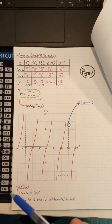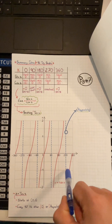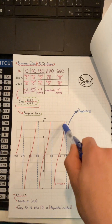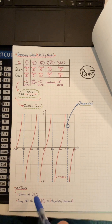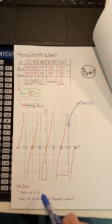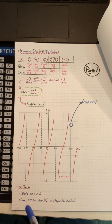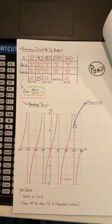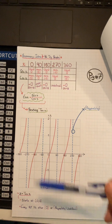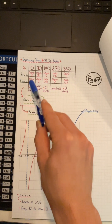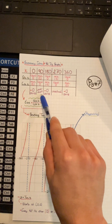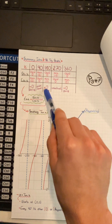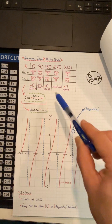Let's have a look at how to graph tan x. The graph of tan x is basically the asymptote graph. y = tan x will always start at (0, 0), and every 90 degrees it's either a 0 or an undefined asymptote. So every 90 degrees it's either a 0 or undefined.